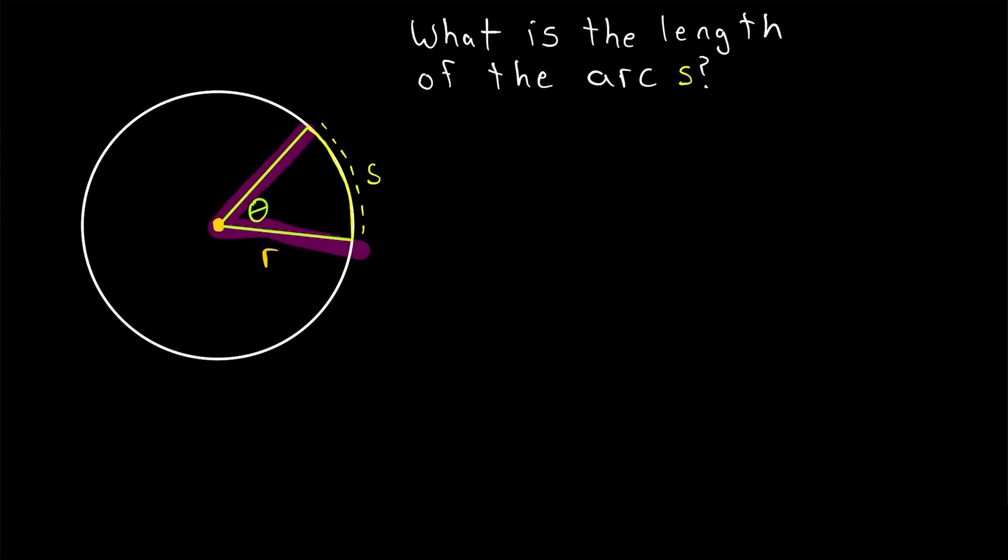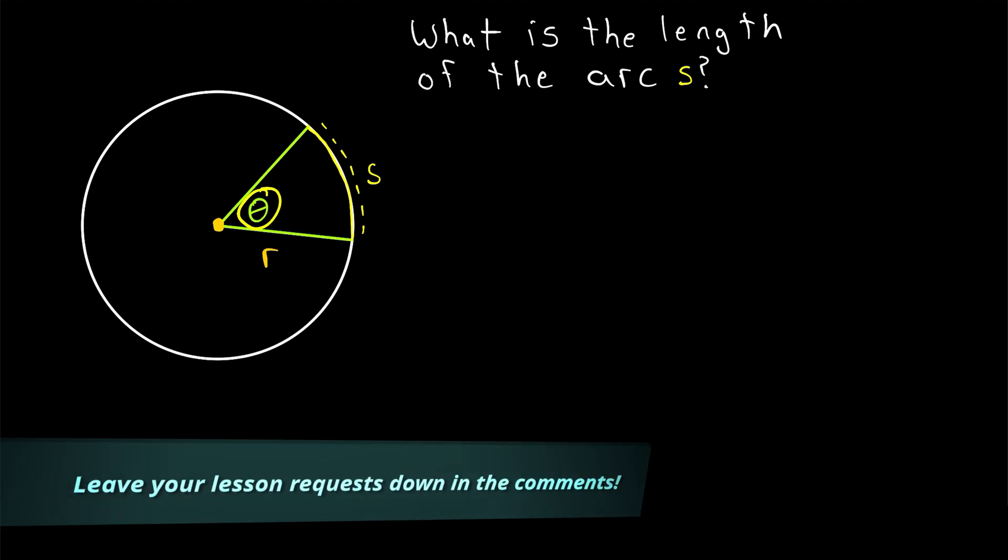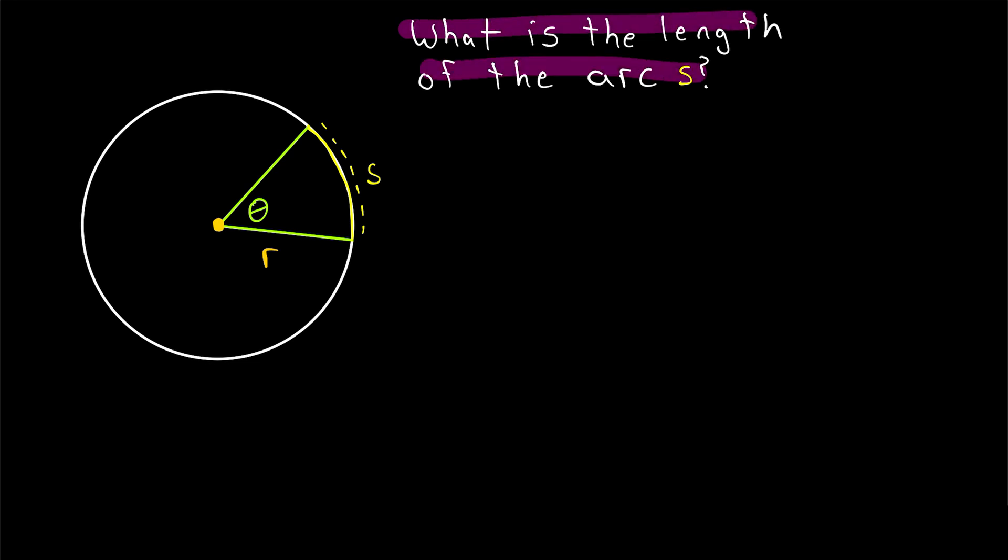We've got a central angle of a circle, and we're given the measure of that angle in degrees. We also have the radius length of the circle. With this information, how can we find the length of the arc S cut by the central angle?